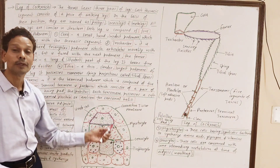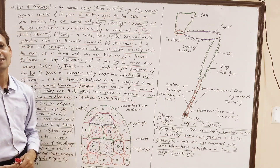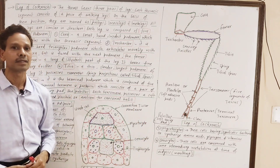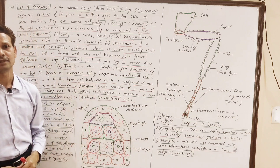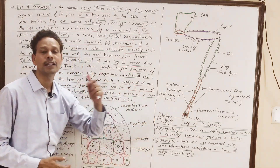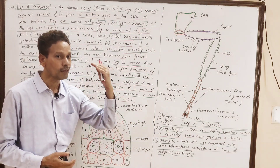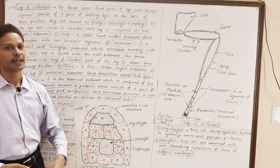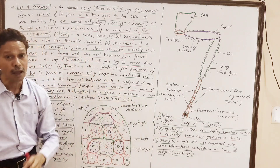The second type of cells of the fat body are mycetocytes. In these cells, symbiotic bacteria are present. The symbiotic bacteria in these mycetocytes are involved in the synthesis of amino acids, synthesis of glycogen from glucose, and also synthesize vitamins for the animal.